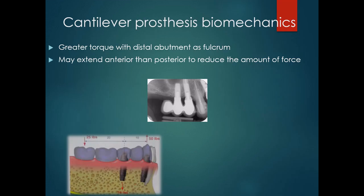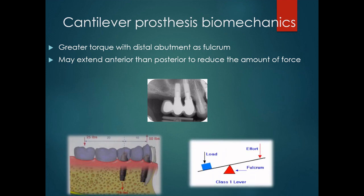Coming to cantilever prosthesis biomechanics. A cantilever prosthesis is one which is supported on one end while the other end is freestanding, and it experiences greater torque with the distal abutment acting as the fulcrum. The cantilever prosthesis actually acts as a class 1 lever and benefits from a gradient type of force — heavier occlusal contact should be applied over the implant bodies, gradually reducing towards the cantilever in order to reduce the magnification of stresses.